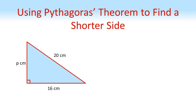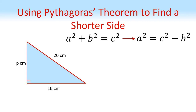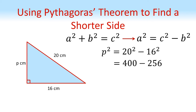So far we've used Pythagoras' Theorem to find missing hypotenuses of triangles, but we can use the same thing to find shorter sides. Here we've got a right-angled triangle. The hypotenuse is 20 centimetres. The shorter sides are P and 16, and we want to work out P. We know that A squared plus B squared equals C squared, where C squared is the square of the hypotenuse. So rearranging this by taking B squared away from both sides, we get that A squared equals C squared minus B squared. Putting our numbers in, we get that P squared equals 20 squared minus 16 squared, which equals 400 minus 256, which equals 144.